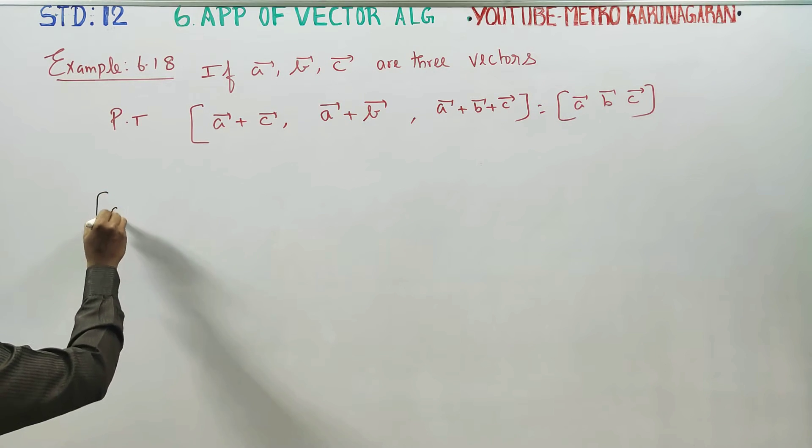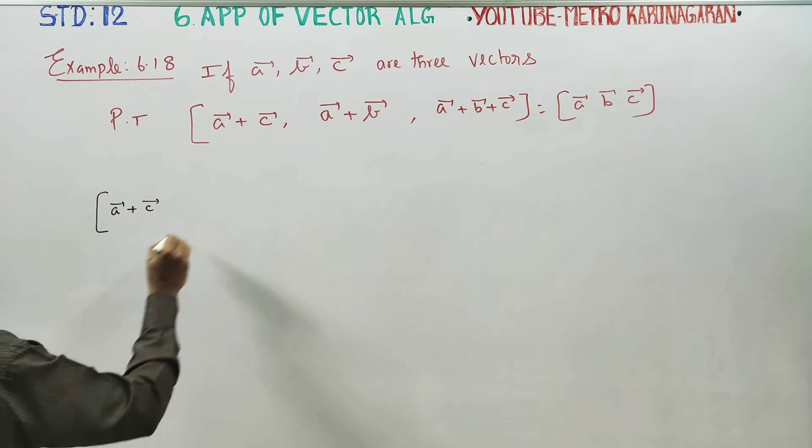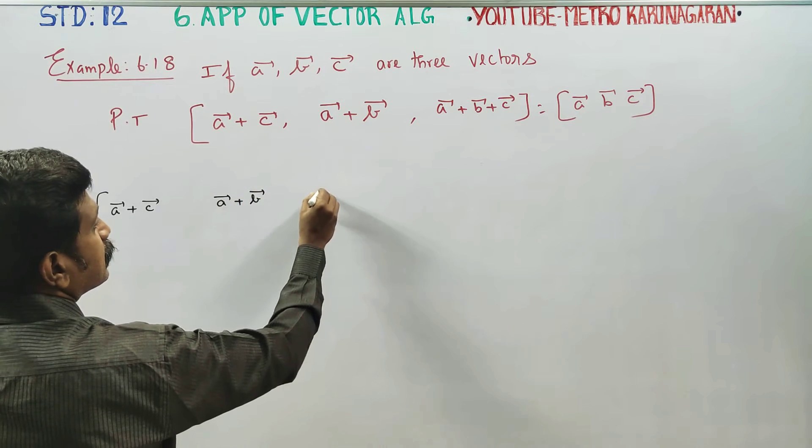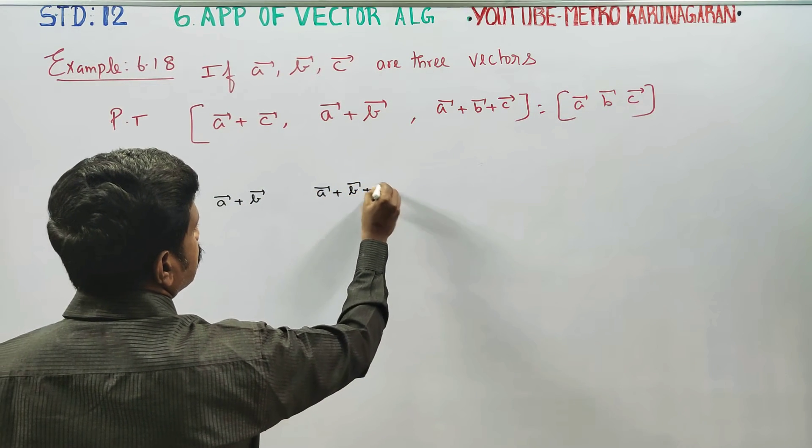I am going to find the scalar triple product of A vector plus C vector, A vector plus B vector, A vector plus B vector plus C vector.